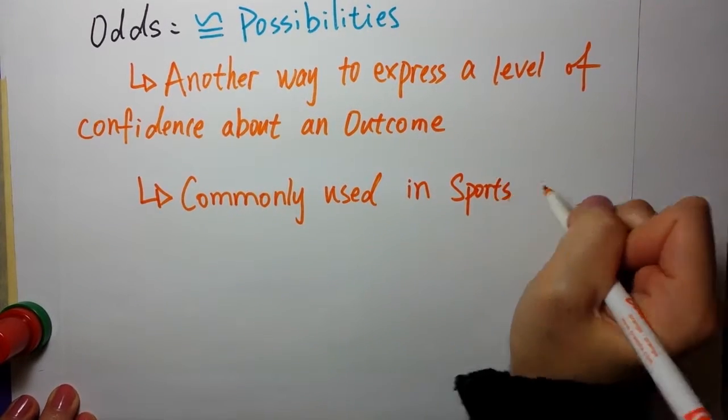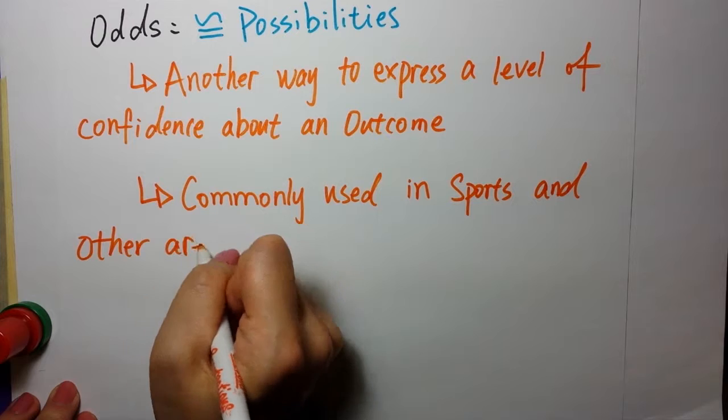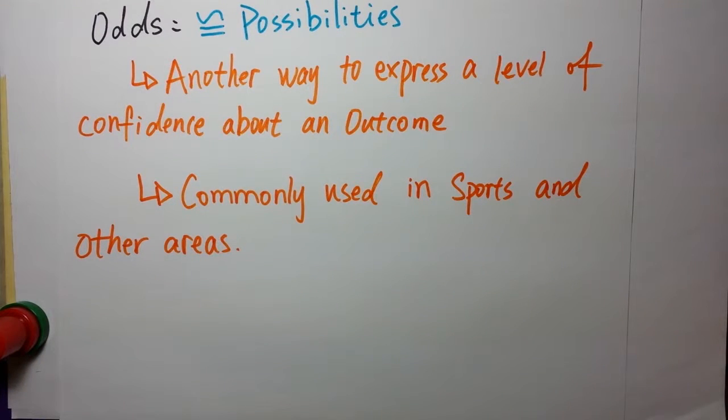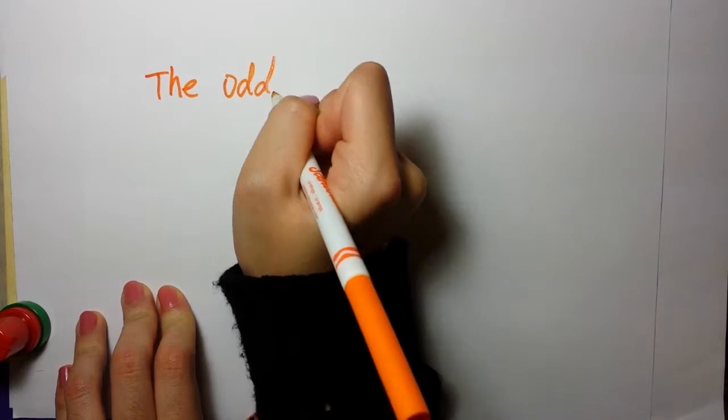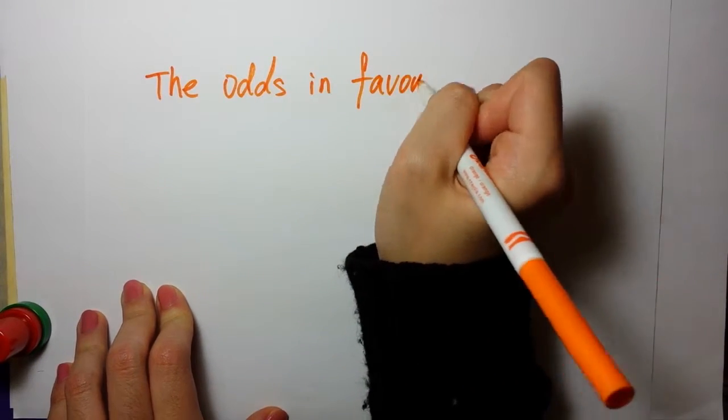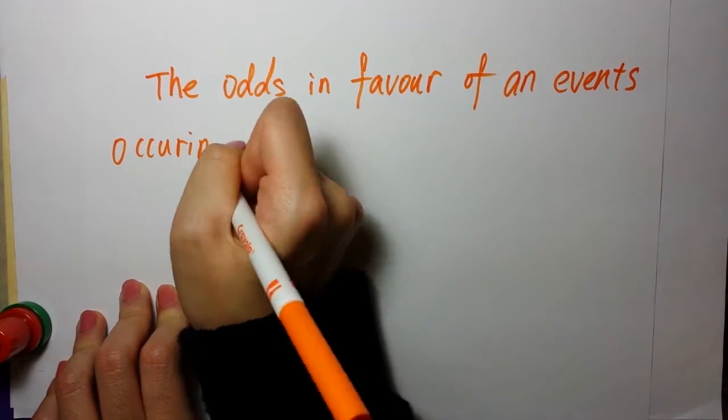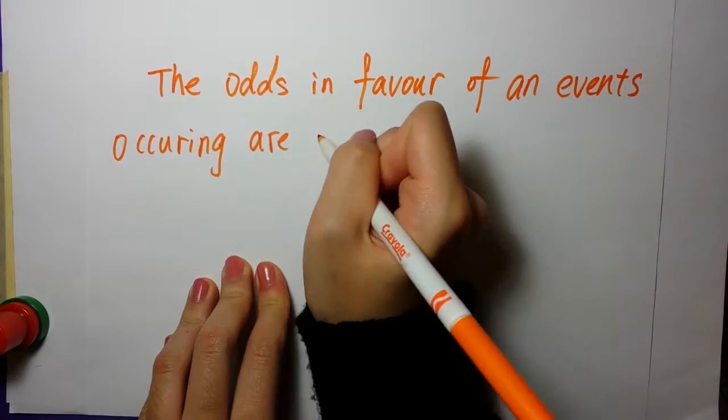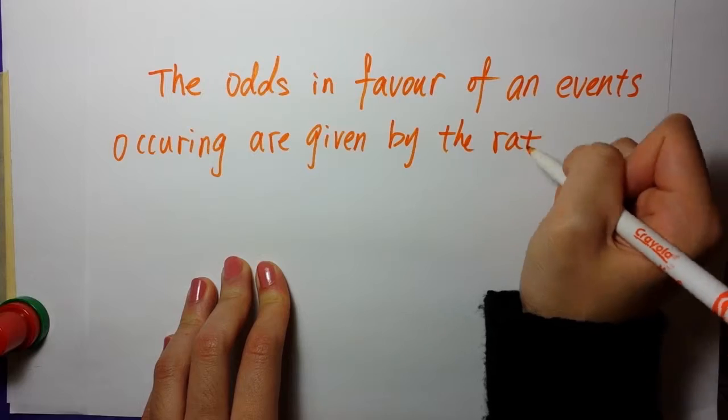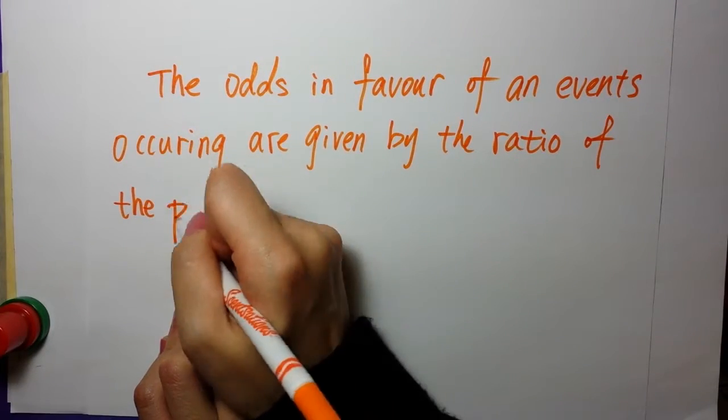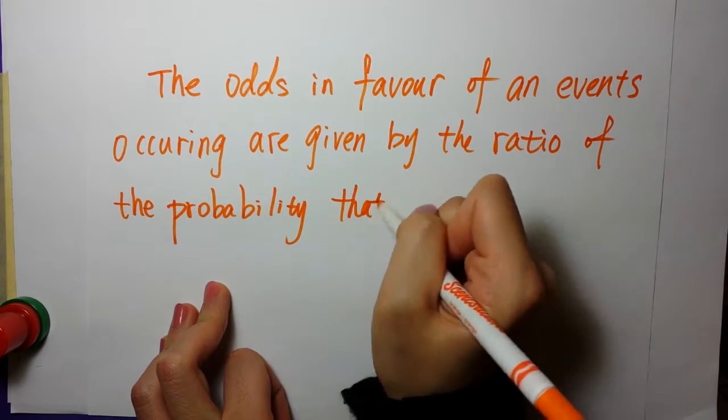For example, whether a sprinter will win or lose a race, or whether a basketball team will make it to the finals. The odds in favor of an event occurring are given by the ratio of the probability that the event will occur to the probability that it will not occur. Odds in favor of A equal P(A) over P(A complement).